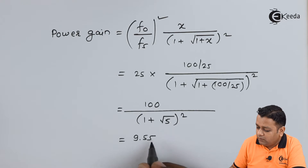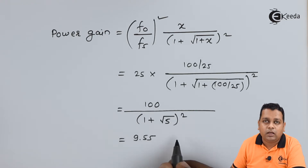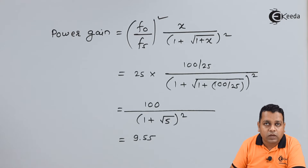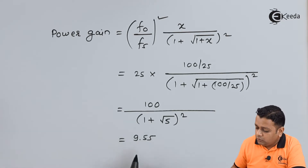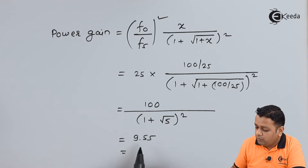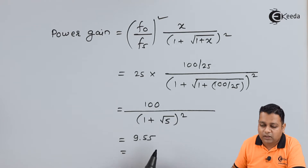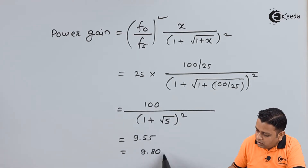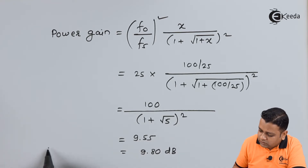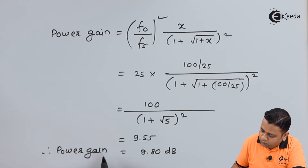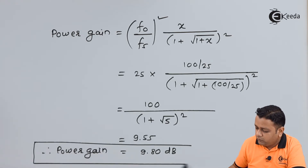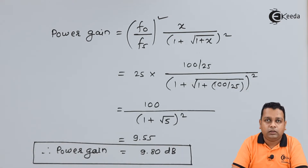This is the gain without units. To express it in decibels, we take 10 log base 10 of 9.55, which gives 9.80 decibels. This is the required power gain and the answer to part A.